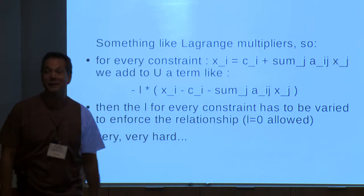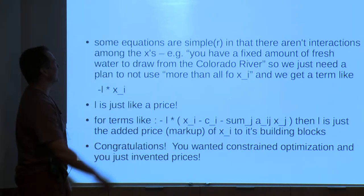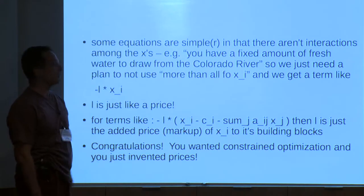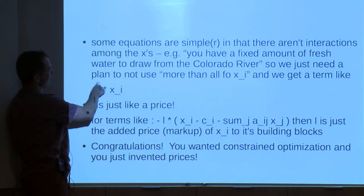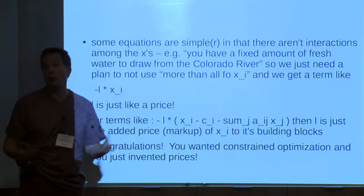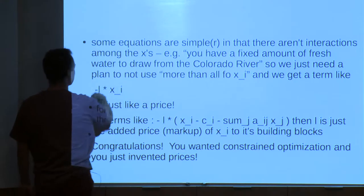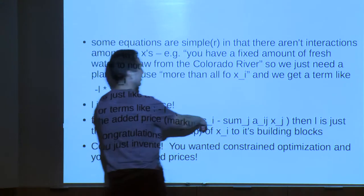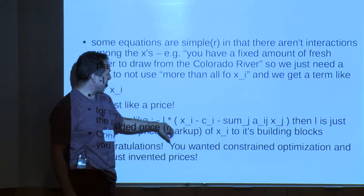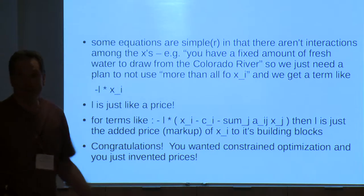It's very hard if you have a lot of constraints, which is what you have with a big economy. Some of these constraints are the simplest thing — there's only so much fresh water from the Colorado River you can use for agriculture. You put a coefficient in front of it. That number is just like a price. The way we know we're not going to use more than there is of something is the price goes up until demand doesn't exceed supply. Congratulations — we wanted to solve a constrained optimization problem and we just invented prices.